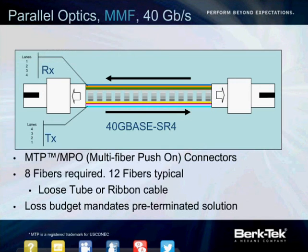Let's talk about 40 gigabit multimode per the 802.3BA standard. You might already have this installed — a 12-fiber trunk with an MPO connector at each end plugged into a cassette, with jumpers going to your devices. If it's OM3 glass or better, you can go from 1 gig to 10 gig to 40 gig simply by plugging the jumper into a different port with 40 gigabit capability. Instantly the four middle fibers go dark, the four on either end go into transmit-receive mode, and you're ready for 40 gigabit.